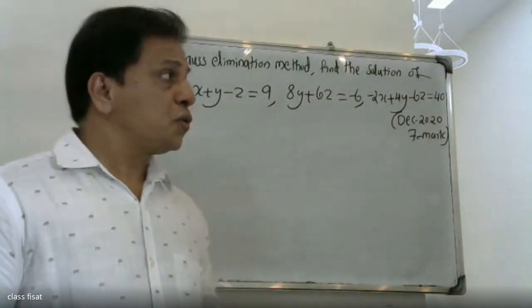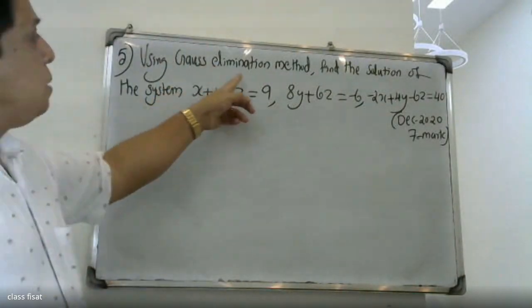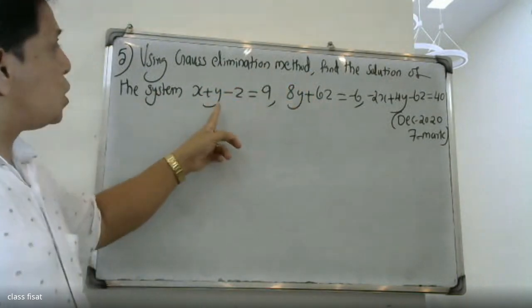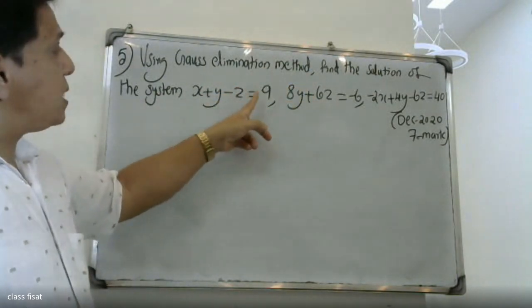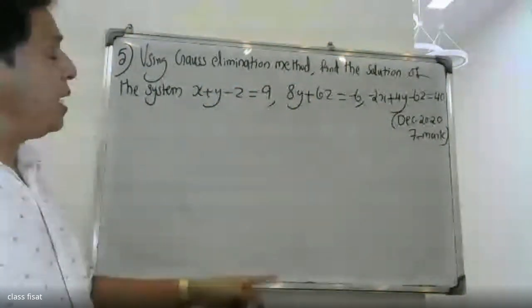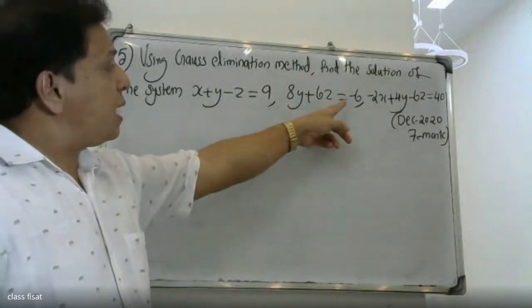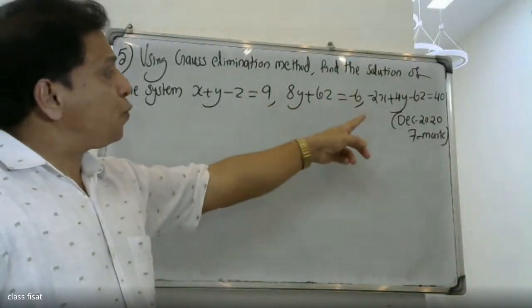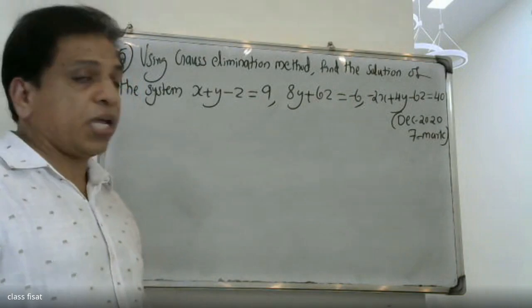Good morning, students. Using the Gaussian elimination method, find the solution of the system: x plus y minus z is equal to 9; 8y plus 6z is equal to minus 6; minus 2x plus 4y minus 6z is equal to 14.